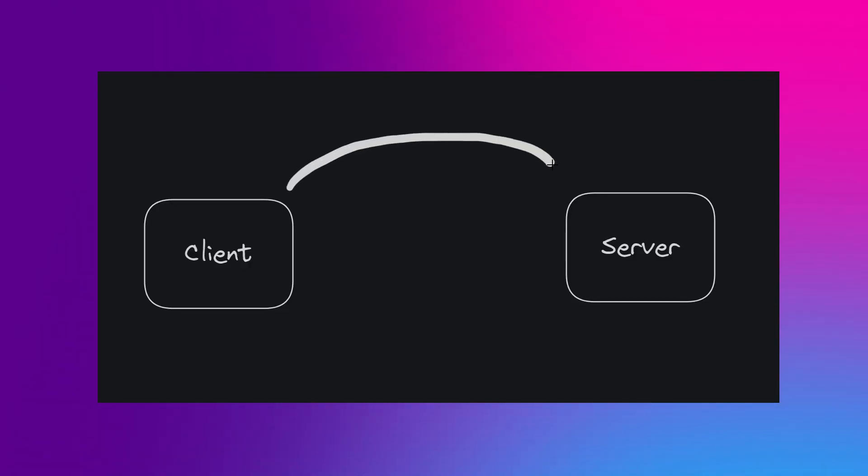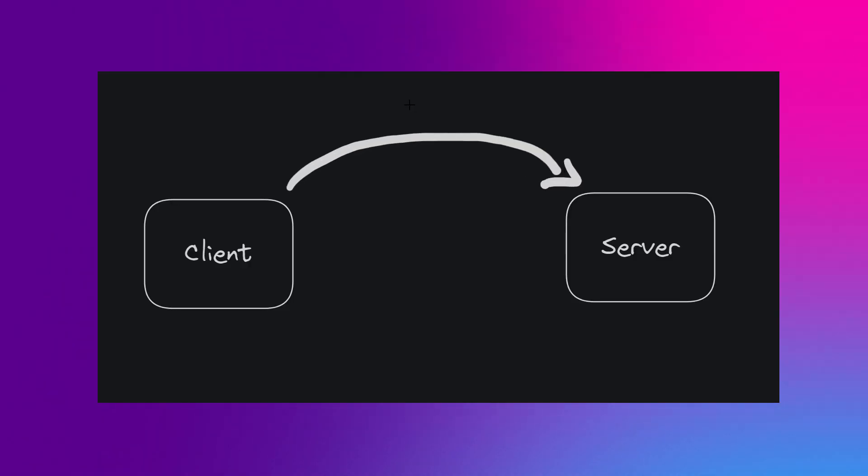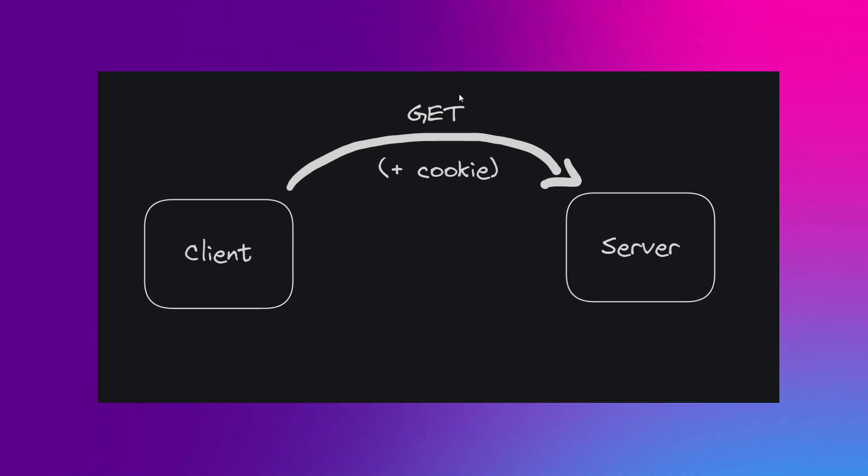The important thing is: whenever that user makes a request to your API, that HTTP-only cookie — meaning it can't be changed or read by JavaScript — is going to be automatically sent along in the request to your server. And then either you validate the signature of the JSON web token in your API route, or you fetch that session cookie in the database and see if it is a valid session.